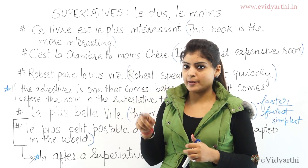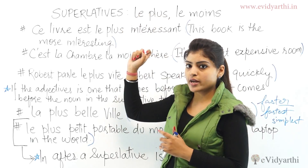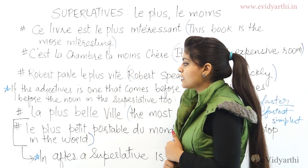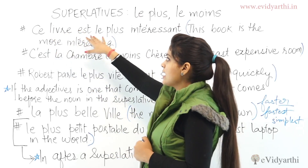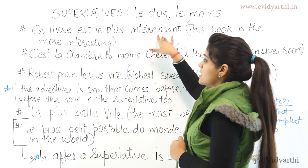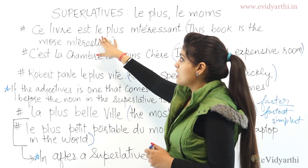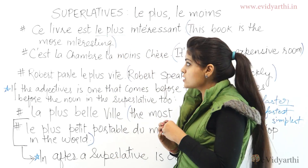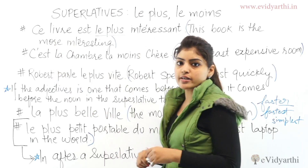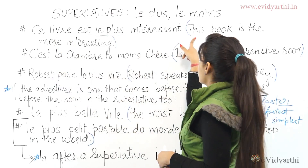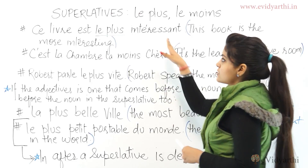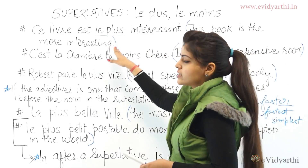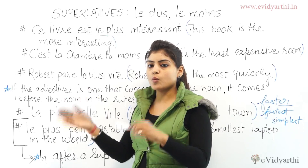For example: 'Ce livre est le plus intéressant.' We use 'le plus' which means 'the most'. 'Ce livre' is the demonstrative adjective meaning 'this book', and 'intéressant' means interesting. So this sentence means: this book is the most interesting.